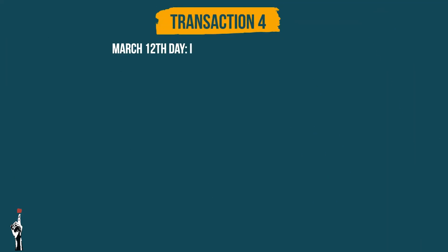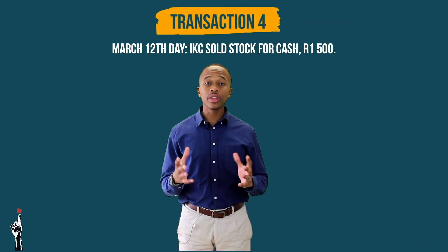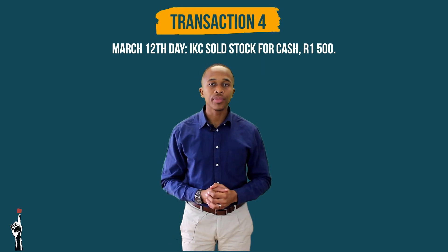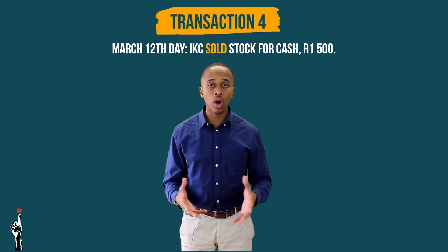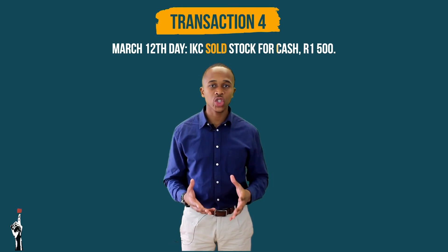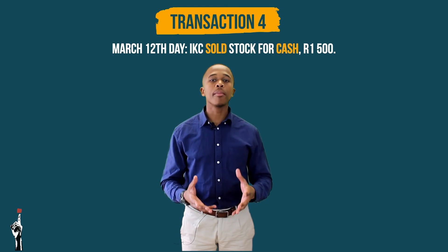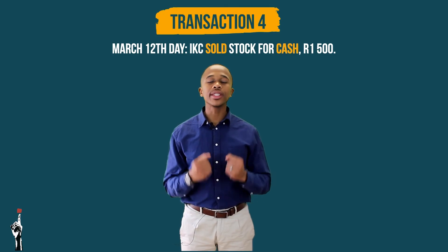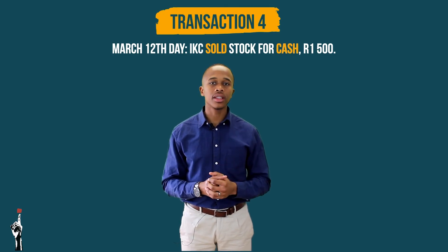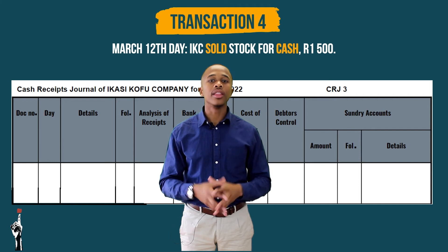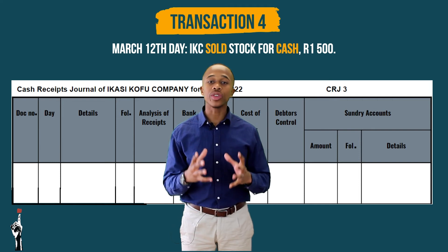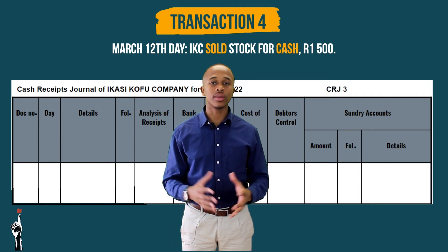IKC sold stock for cash for 1,500 Rand. The business sold stock for cash, so the business receives money. This should be posted on the CRJ — the cash receipts journal.